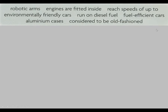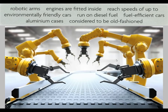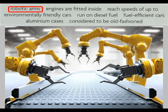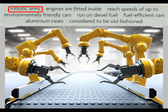Now you will see a picture. Look at the picture and try to choose which of these phrases the picture shows. Can you guess which phrase is shown in this picture? The answer is robotic arms. When you look at this picture, you see a lot of arms — these are robotic arms. Today, in modern factories, factory owners prefer robotic arms because they do jobs more efficiently, faster, and more accurately.